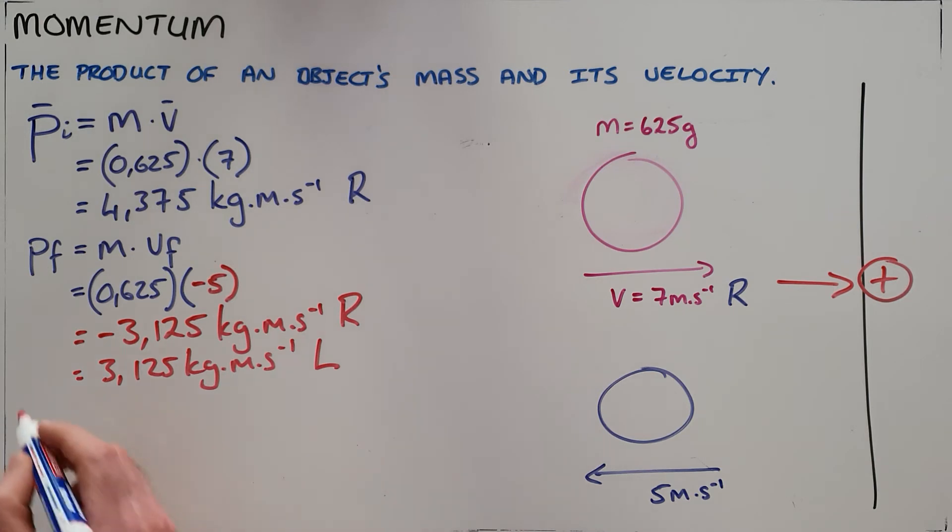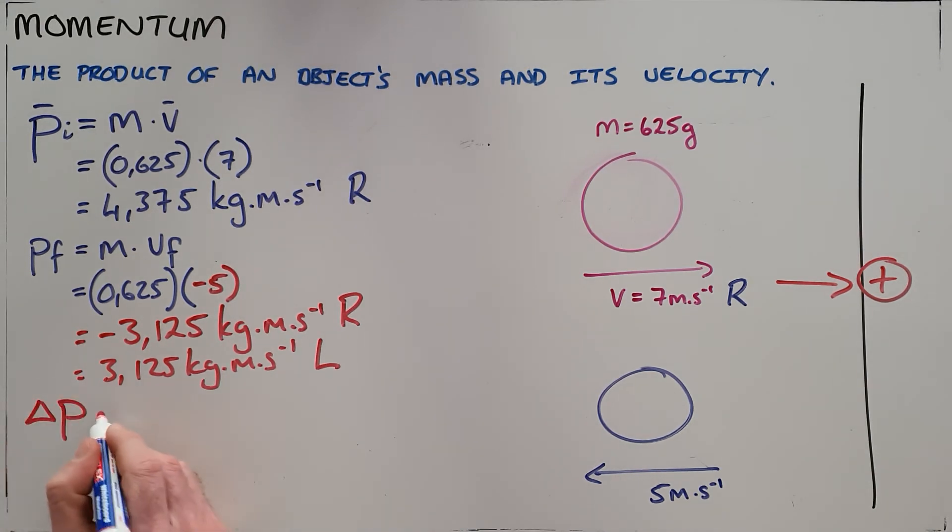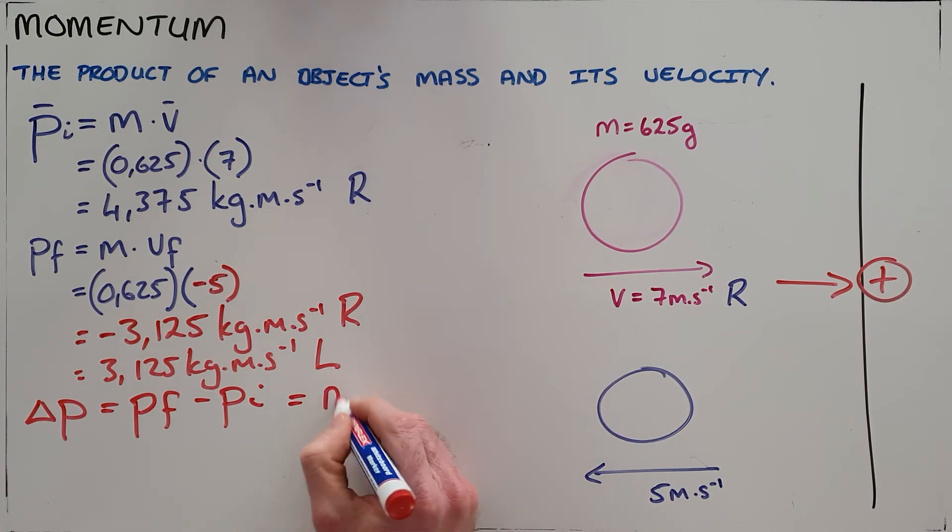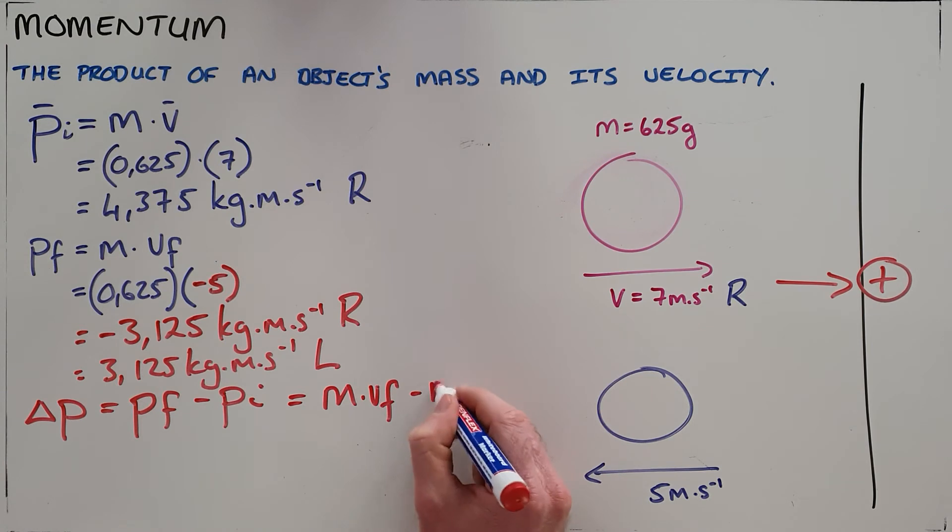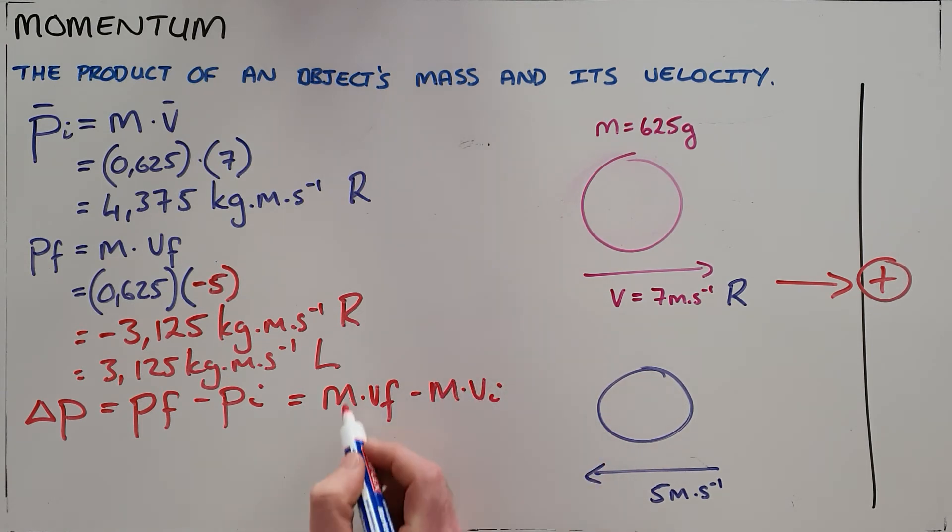And so we can calculate our change in momentum by saying our change in momentum is equal to the final momentum minus the initial momentum, which could also be written as the mass multiplied by the final velocity minus the mass multiplied by the initial velocity. We can see here that the mass remains unchanged. So this can actually be simplified as the mass multiplied by the change in velocity.